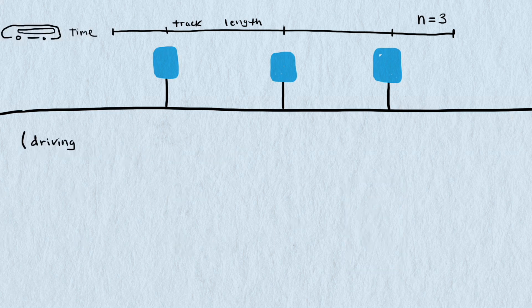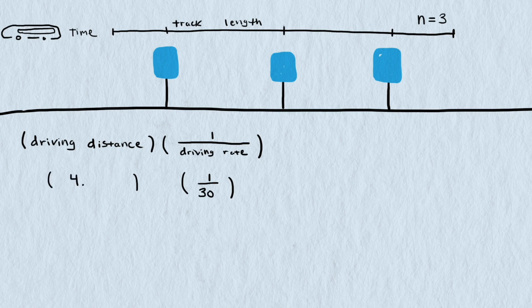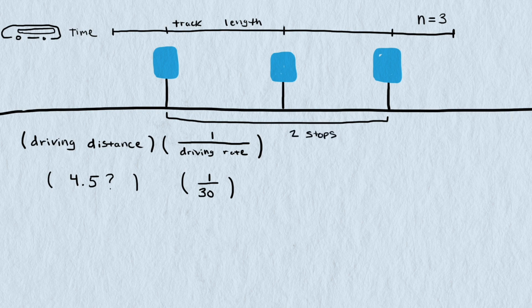For driving time we can take the driving distance and divide by the driving rate, which we assumed to be 30 miles an hour on average. The driving distance isn't all 4.5 miles. If we go back to our diagram, notice that the bus only travels between two stops before letting the passenger off.